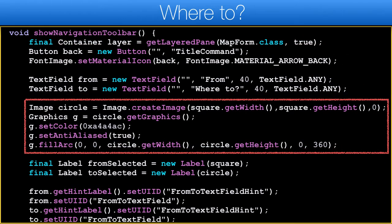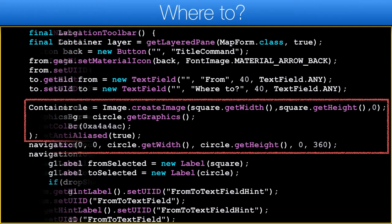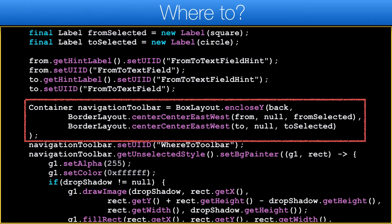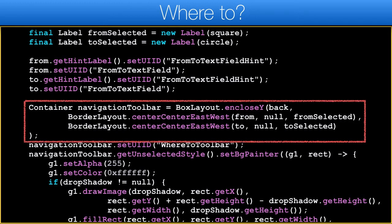The square image already exists from before — we created it for the 'where to' button. We add a new circle image that we can place next to the from/to fields. We place the text fields in a border layout next to the labels representing the circle and square, and place that in a box layout Y container. That's effectively the entire UI of the top portion.